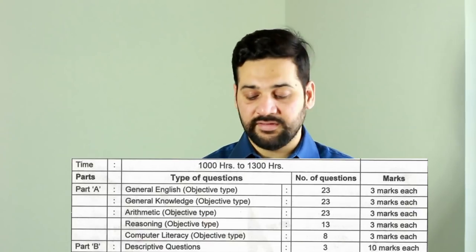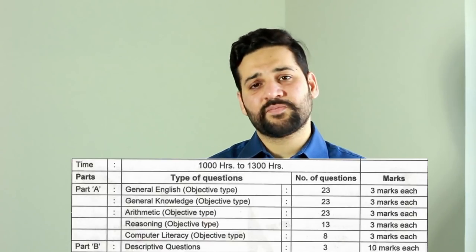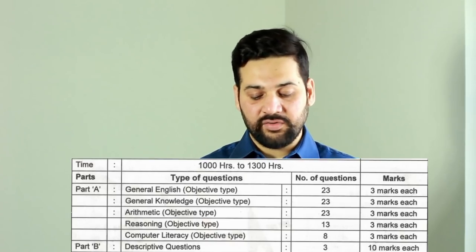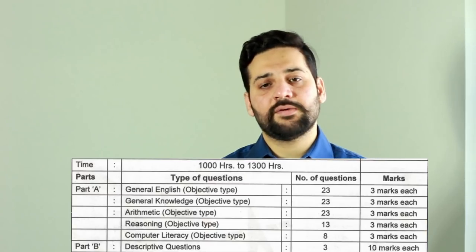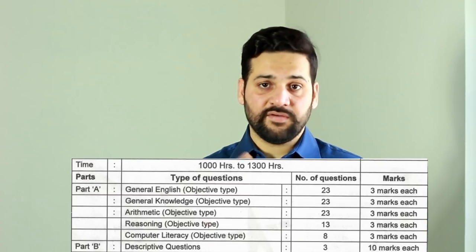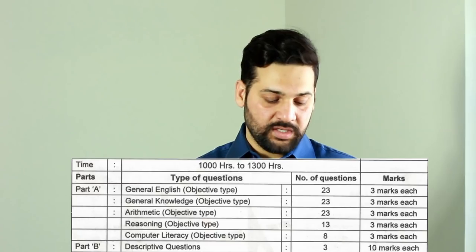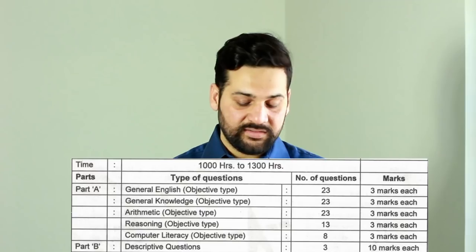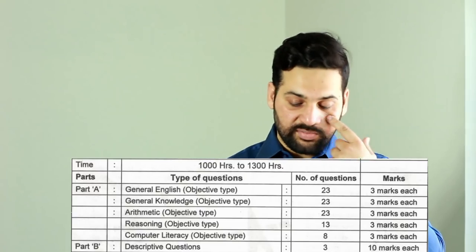The passing criteria is 50%. The exam structure consists of a single test with two parts — objective and descriptive. In the objective part: General English (23 questions), General Knowledge (23 questions), Arithmetic (23 questions), Reasoning Ability (23 questions), and Computer Literacy (8 questions). Each question carries 3 marks. The descriptive paper has 3 questions.